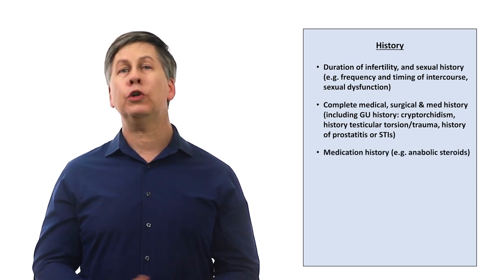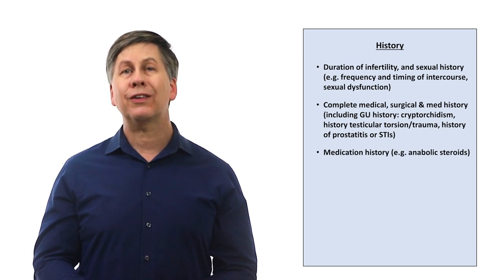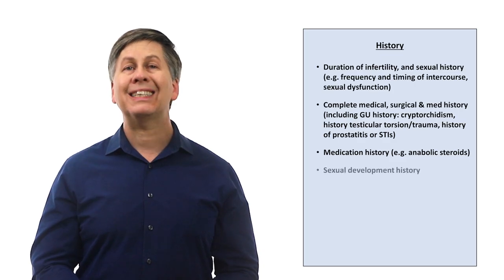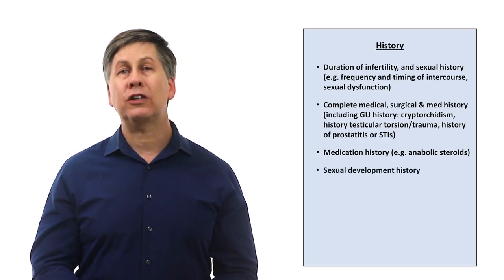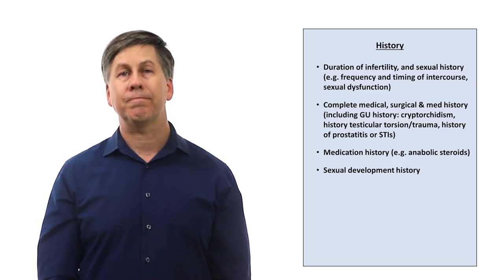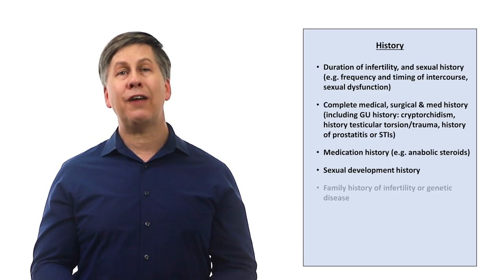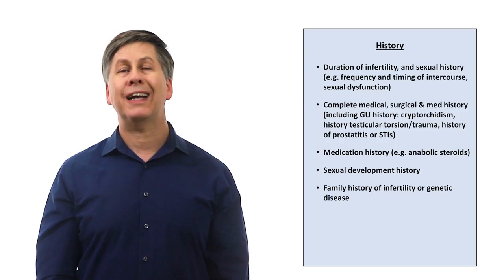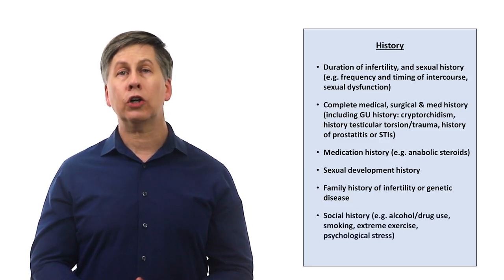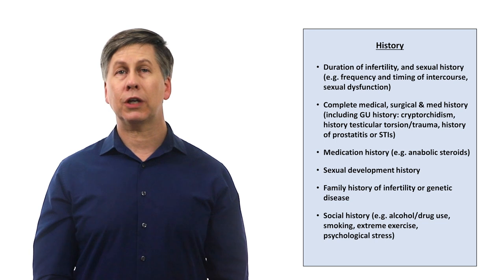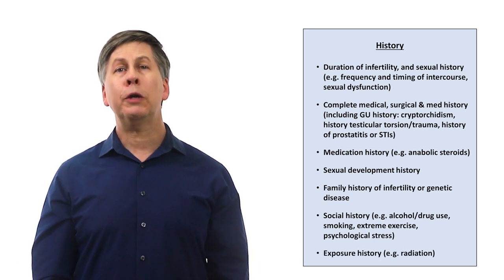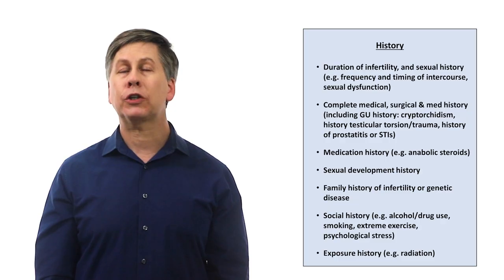A medication history, including prior use of anabolic steroids, which can lead to a period of infertility lasting for months after their cessation. A sexual development history, including age of puberty, and the presence of any abnormalities in the development of secondary sex characteristics. Does the patient have a family history of fertility problems that would suggest a genetic explanation? A thorough social history, including alcohol or drug use, smoking, extreme exercise, or psychological stress. And exposure history, including but not limited to a history of either medical or occupational radiation.